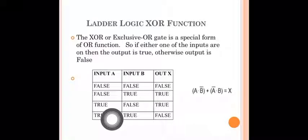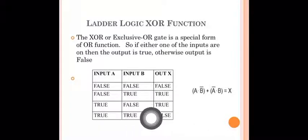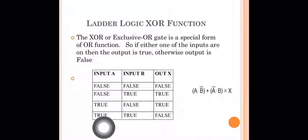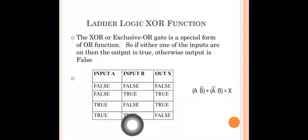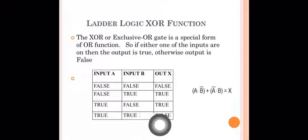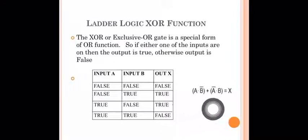Input A is TRUE and input B is FALSE, so the output is TRUE. Similarly, input A is TRUE and input B is TRUE — they are in the same state — so the output is FALSE.